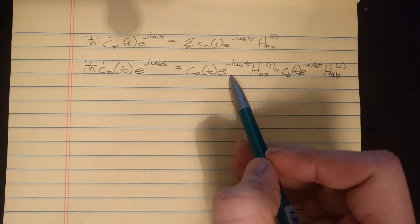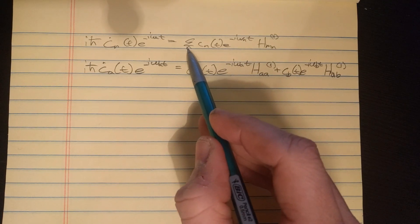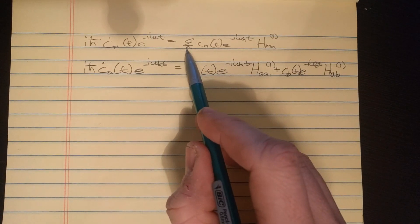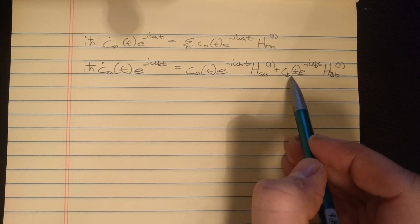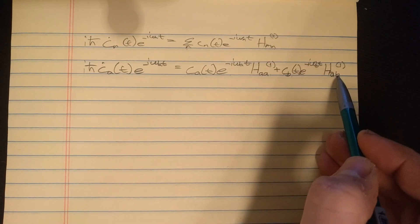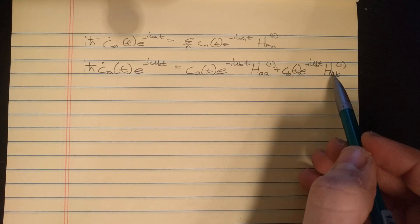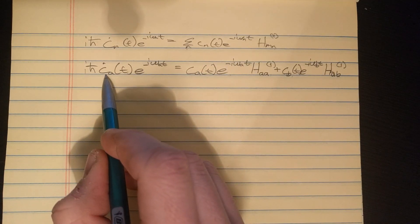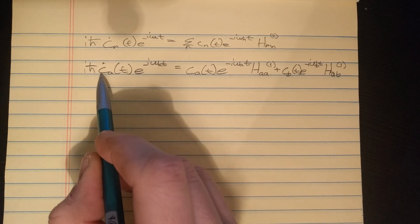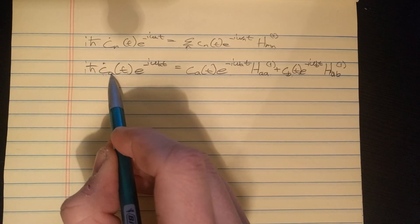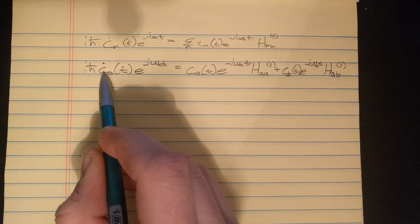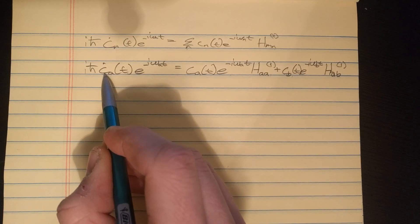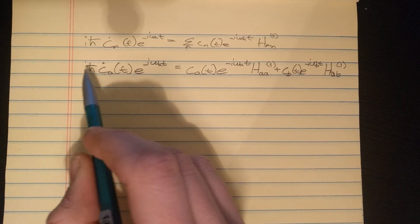So I'm going to take this equation and rewrite it on the next page, just so we have it at the top to reference. So now we have noticed that we've made no approximation so far, and this is exact. Now we're going to make our first approximation, where we assume that our system only has two states, a and b. So I'm going to rewrite these equations with a and b like such.